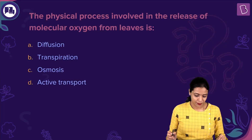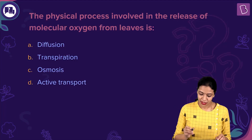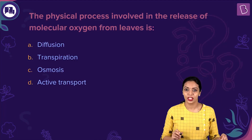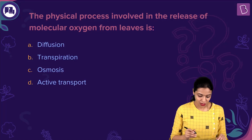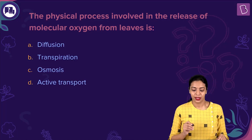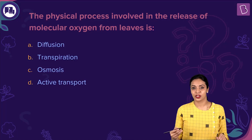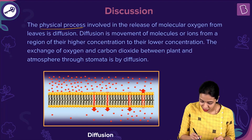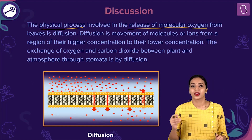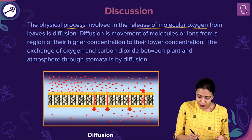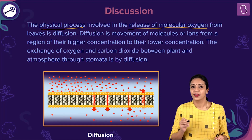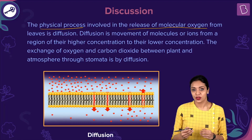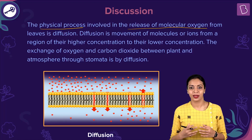Let us look at the question: the physical process involved in the release of molecular oxygen from leaves is — the options are diffusion, transpiration, osmosis, and active transport. The process involved in release of oxygen from the leaves is diffusion. Diffusion can be defined as the movement of molecules or ions from a region of higher concentration to a region of lower concentration. Exchange of gases happens between the plants and the environment by diffusion.